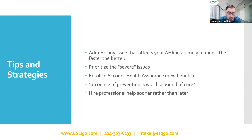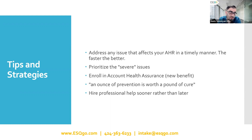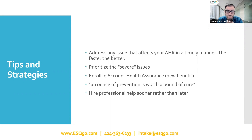Amazon rolled out a program called Account Health Assurance. You should see it in your account health dashboard on the upper right-hand side. If your score has been 200 or higher for the last six months and you're a professional seller — paying $39 a month — then you'll have access to it. What this means is that before they suspend your account, they'll contact you and try to work it out within 72 hours. You need to have a phone number on file with them too.